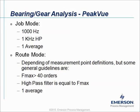Peak view measurements can be measured in the job mode or in the route mode. If you measure peak view data in the job mode using the default settings, it will collect a spectrum up to 1000 Hz with a high pass filter of 1000 Hz and one average.